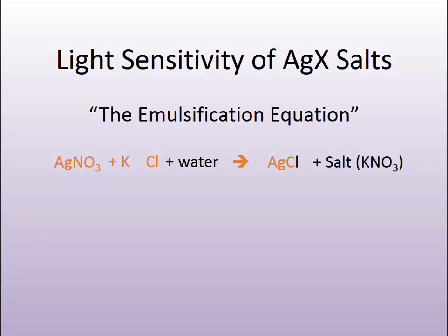This combination is engineered for a particular type of light sensitivity for our photographic applications. This equation starts off with a very common silver source, and that source is silver nitrate. It's almost always silver nitrate because this is a very soluble form of silver that we can deliver in a water-based solution. We learn from general chemistry that all nitrate salts are soluble in water, which is why the silver source in most all applications is silver nitrate.